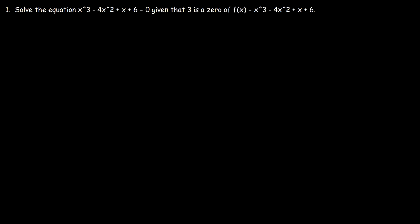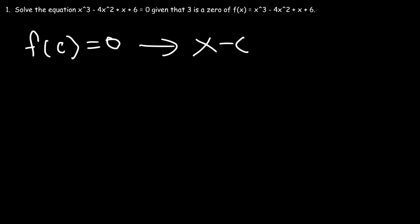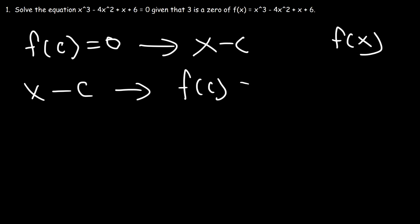In this video we're going to focus on using the factor theorem to solve polynomial equations. The basic idea is: if f(c) = 0, then x minus c is a factor of f(x). The reverse is also true — if x minus c is a factor, then f(c) = 0.